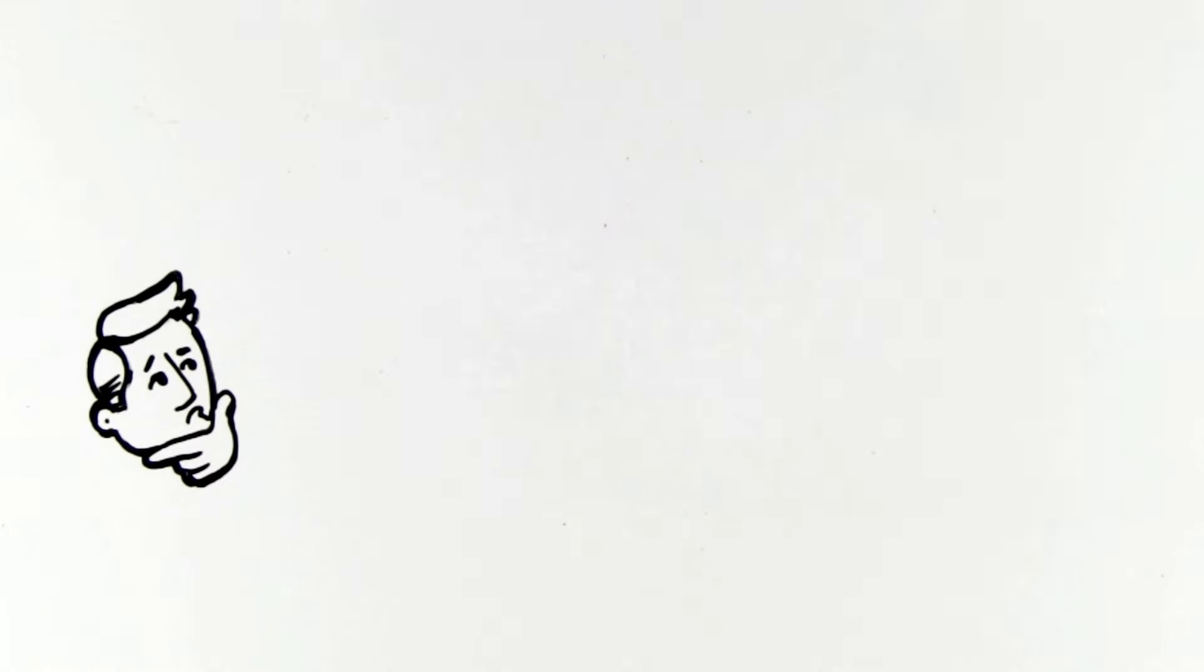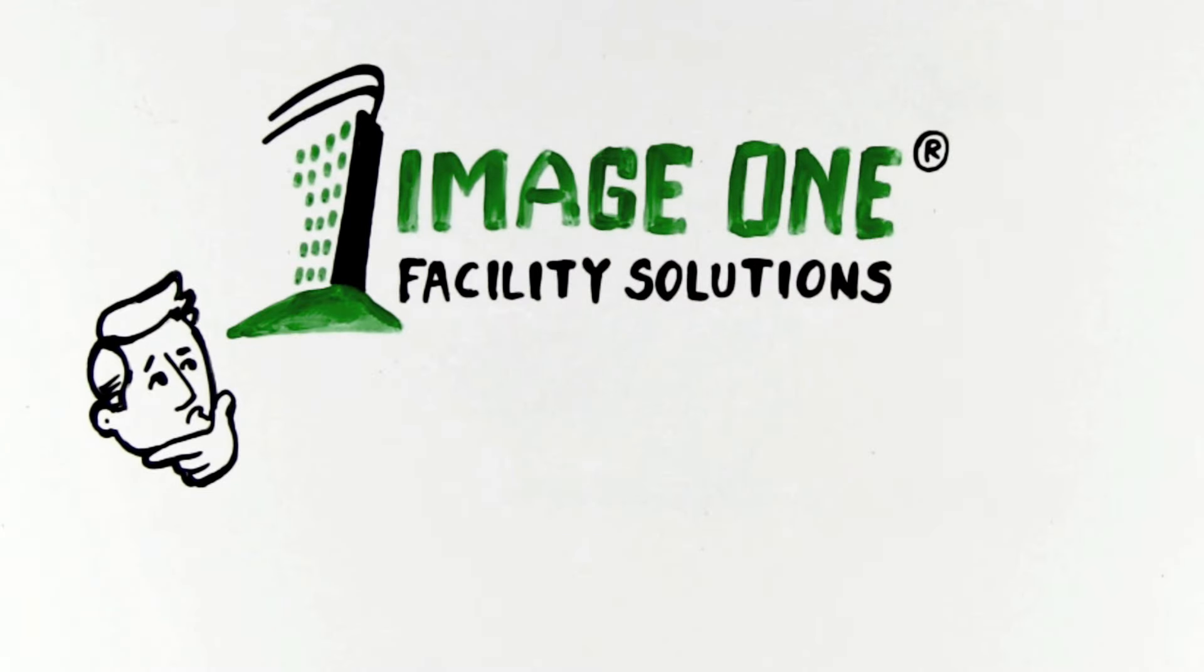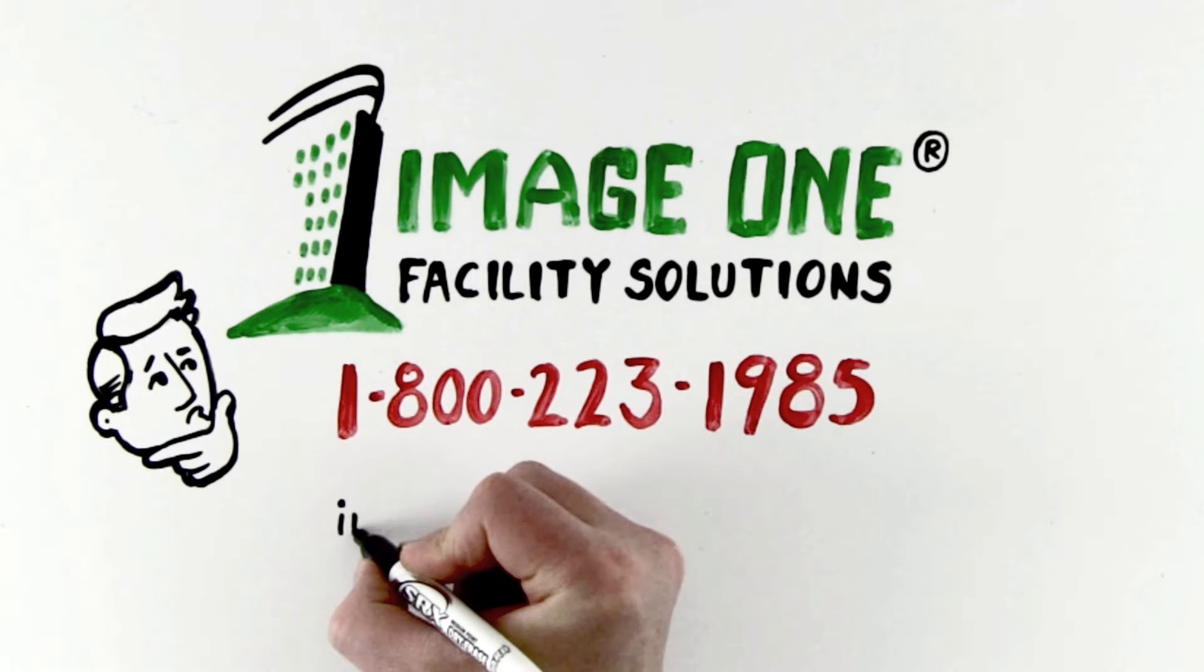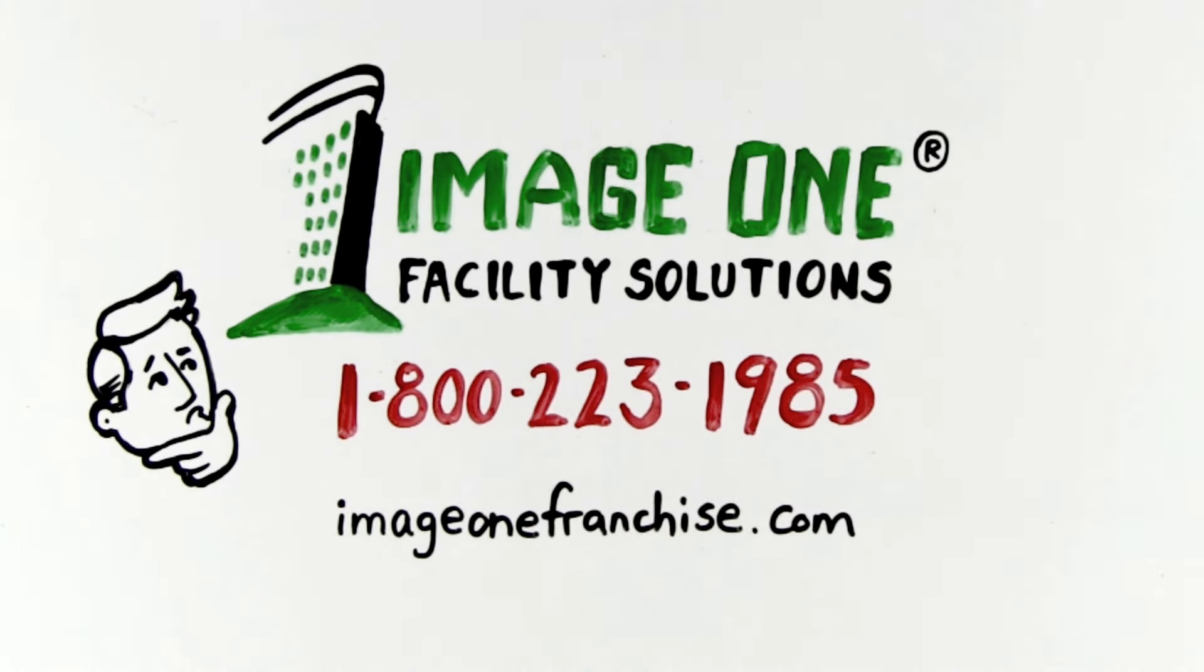If you're interested in starting your own business, but aren't quite sure how to do it, ImageOne can help. Give us a call today at 1-800-223-1985, or go to www.imageonefranchise.com to find out more.